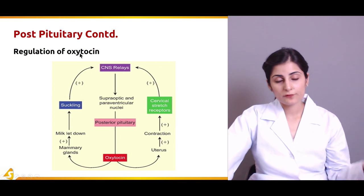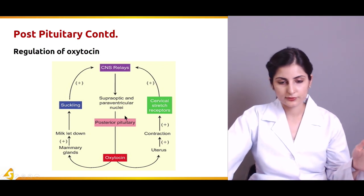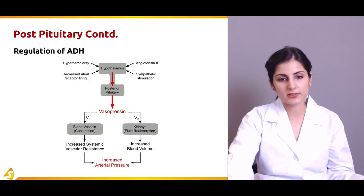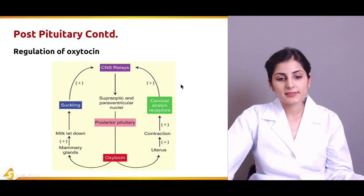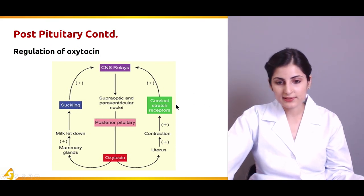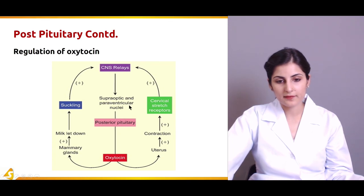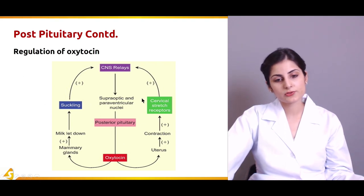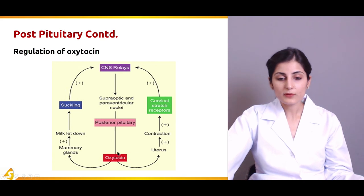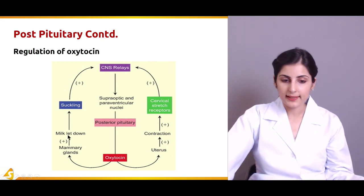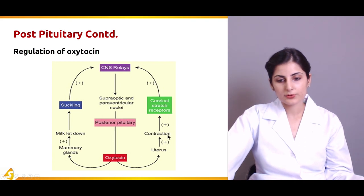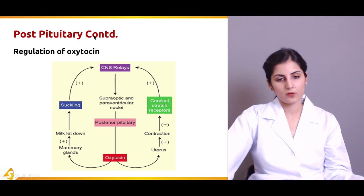Now let us study the regulation of oxytocin. Suckling and cervical stretch receptors are the two stimuli that have a positive effect — they stimulate the supraoptic and paraventricular nuclei to produce oxytocin from the posterior pituitary. These two stimuli have a positive feedback effect on oxytocin production, which in turn produces milk let-down from the mammary glands and contraction of the uterus.